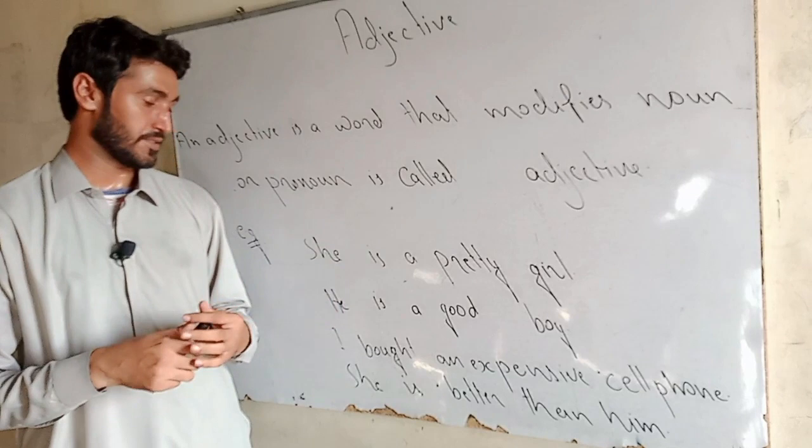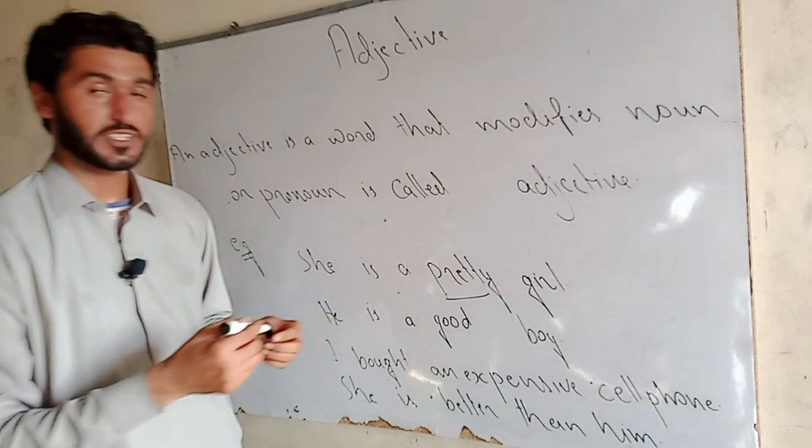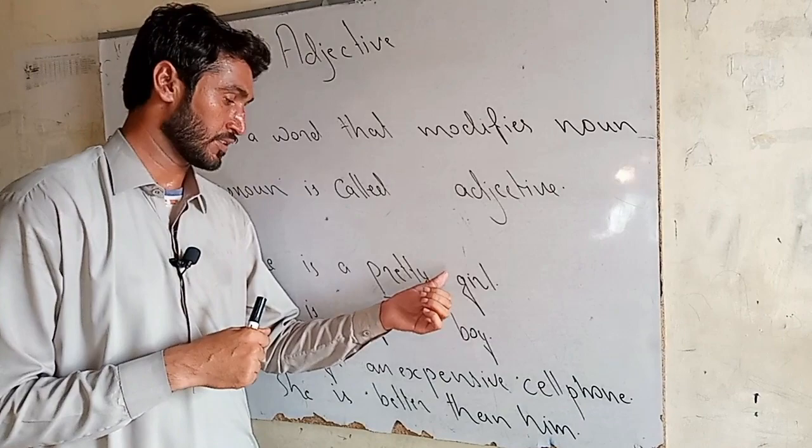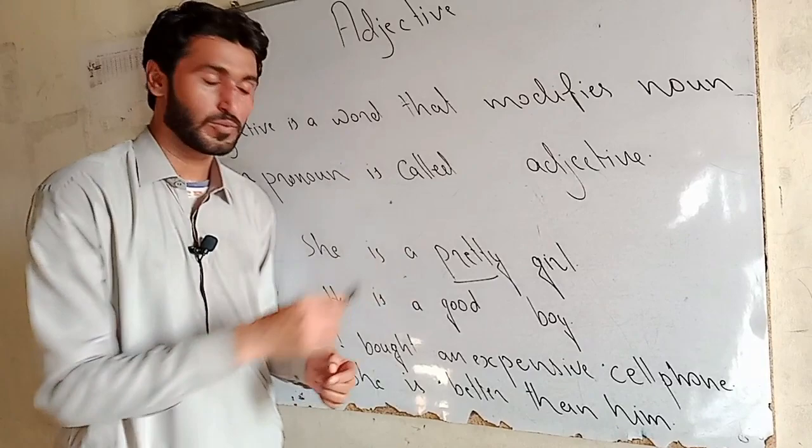In the first example: she is a pretty girl. Pretty is an adjective. Adjective modifies a noun, so we have girl — girl is a noun. Adjective modifies noun, so pretty is modifying girl. Here pretty is an adjective.